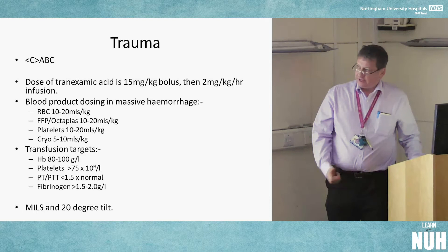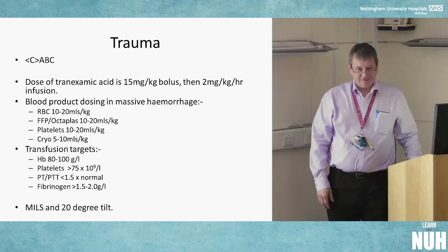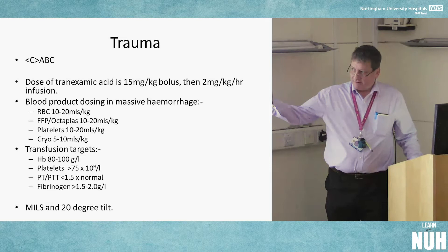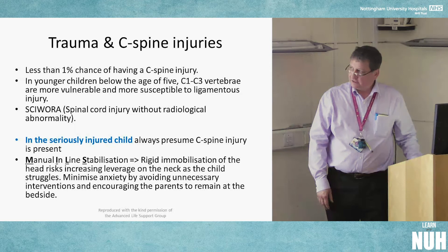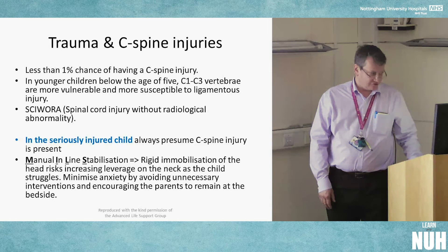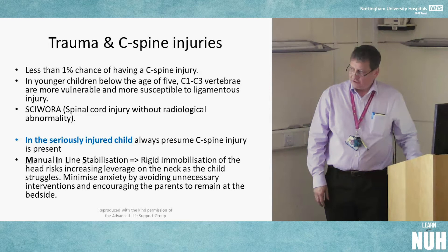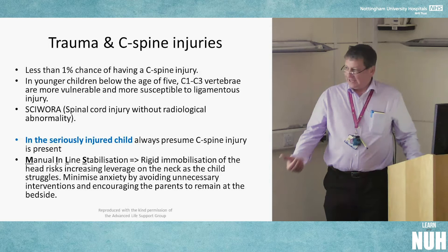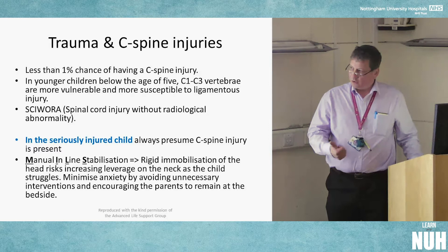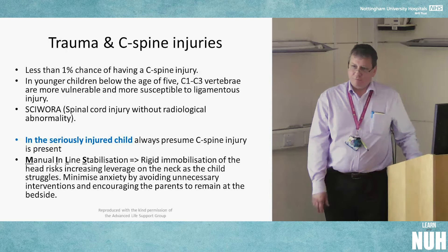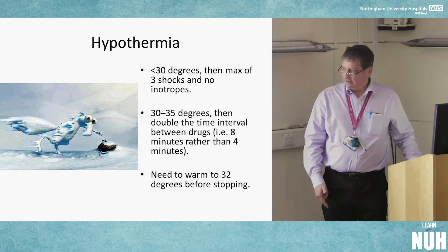Trauma: same principles — catastrophic haemorrhage, then ABC. Tranexamic acid is 50 mg/kg followed by an infusion. For massive haemorrhage, blood products guidance is provided. Transfusion targets are similar to adults. C-spine injury is uncommon but the smaller the child, the more vulnerable C1-C3 are due to the larger head acting as a pivot. SCIWORA — spinal cord injury without radiological abnormality — can also occur. Manual in-line stabilisation is now preferred over the old collar-blocks-and-tape approach, especially in a frightened child. Get parents involved to help calm them.